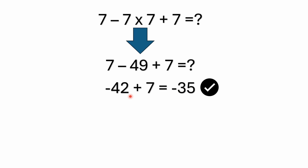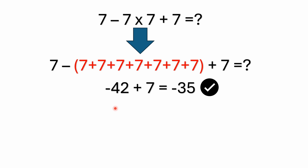Think of it this way: if you're in debt $42 — or 42 pounds, or 42 euros, whatever your currency is — and you pay off $7 of your debt, you're still going to be in debt, but a little less. You're negative $35. You're still in debt, but you're getting better. Multiplication is just shorthand for repeated addition, so you can replace the seven times seven by adding seven sevens, and you're still going to get negative 35. This negative sign applies to everything in here, so you still get negative 35.